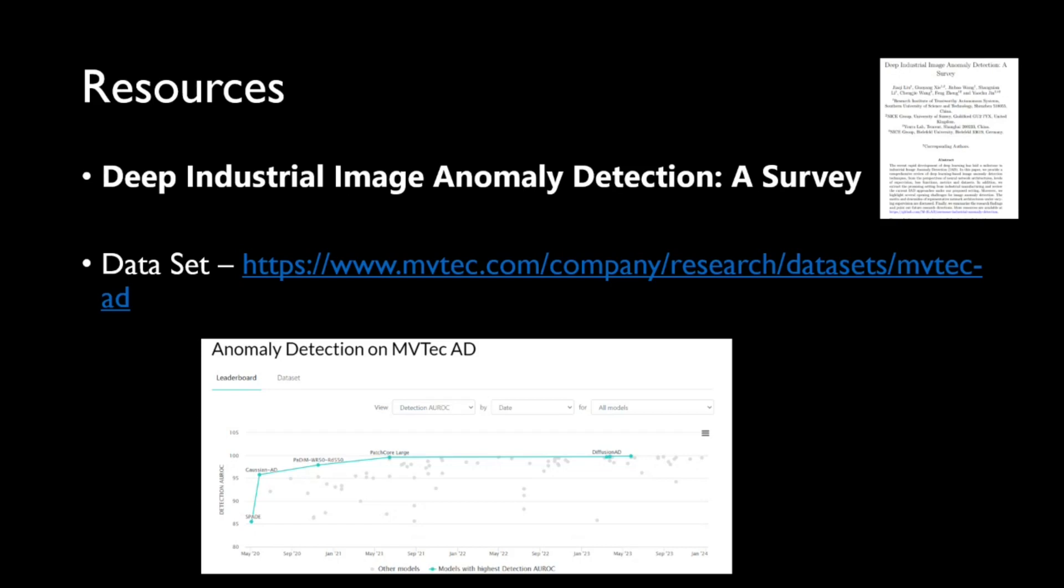So what are the resources I'm going to use? First, I'm going to use this survey paper. The name of the survey paper is given here: Deep Industrial Image Anomaly Detection. The dataset I'm going to use is from this MVTec dataset and yeah, it's a popular anomaly detection dataset.